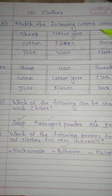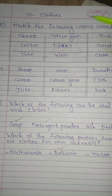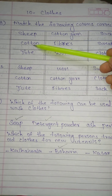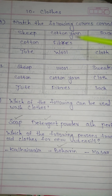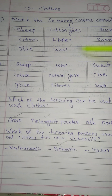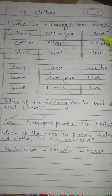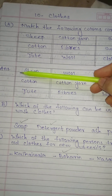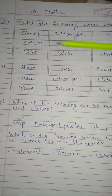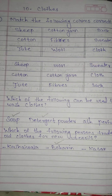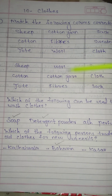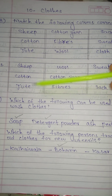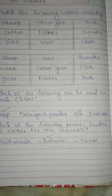A. Match the following columns correctly. Shape: cotton, jute, cotton yarn, fibre, wool, sack, sweater, cloth. The answers are: wool - sweater, cotton - cotton yarn - cloth, jute - fibres - sack.